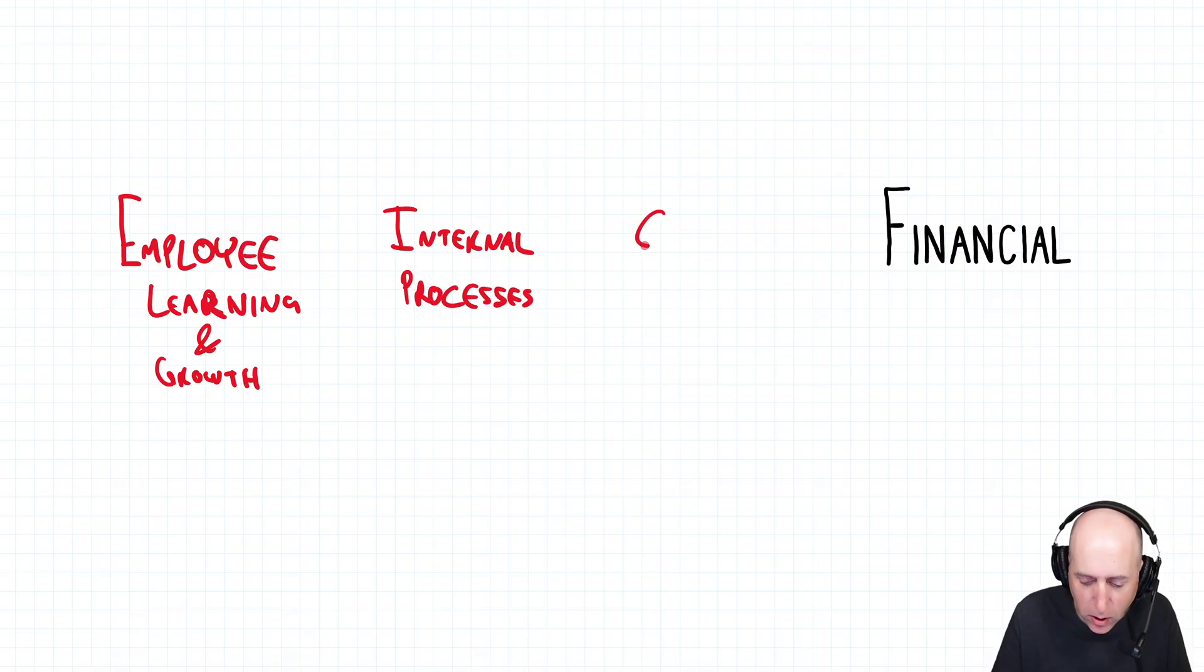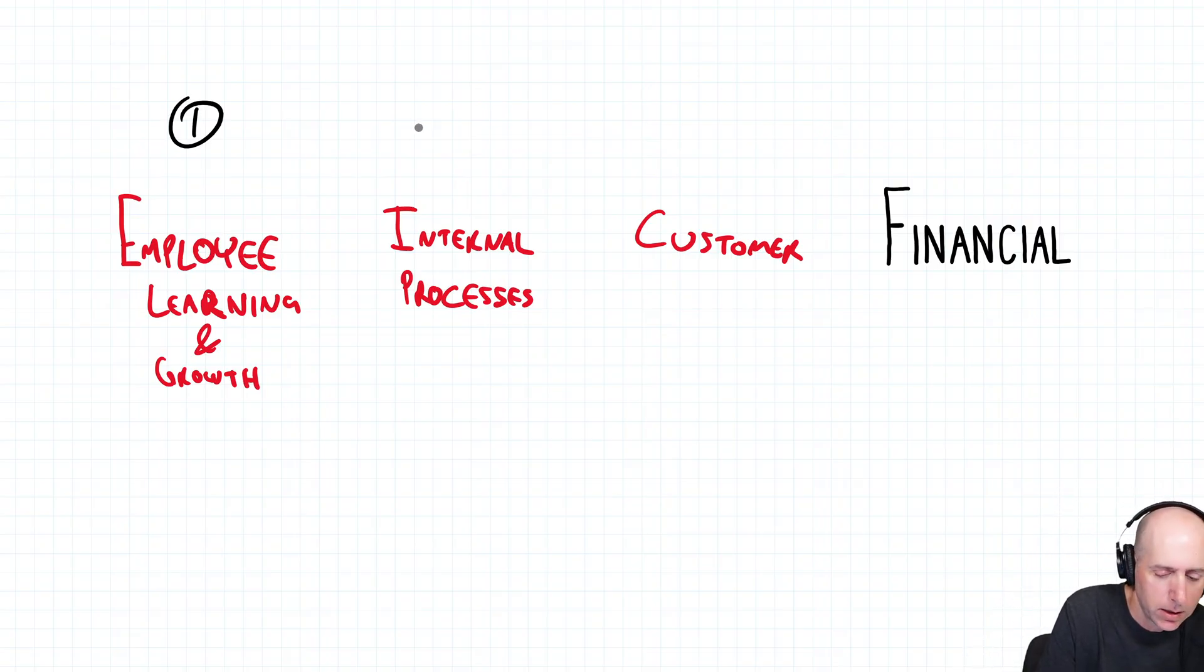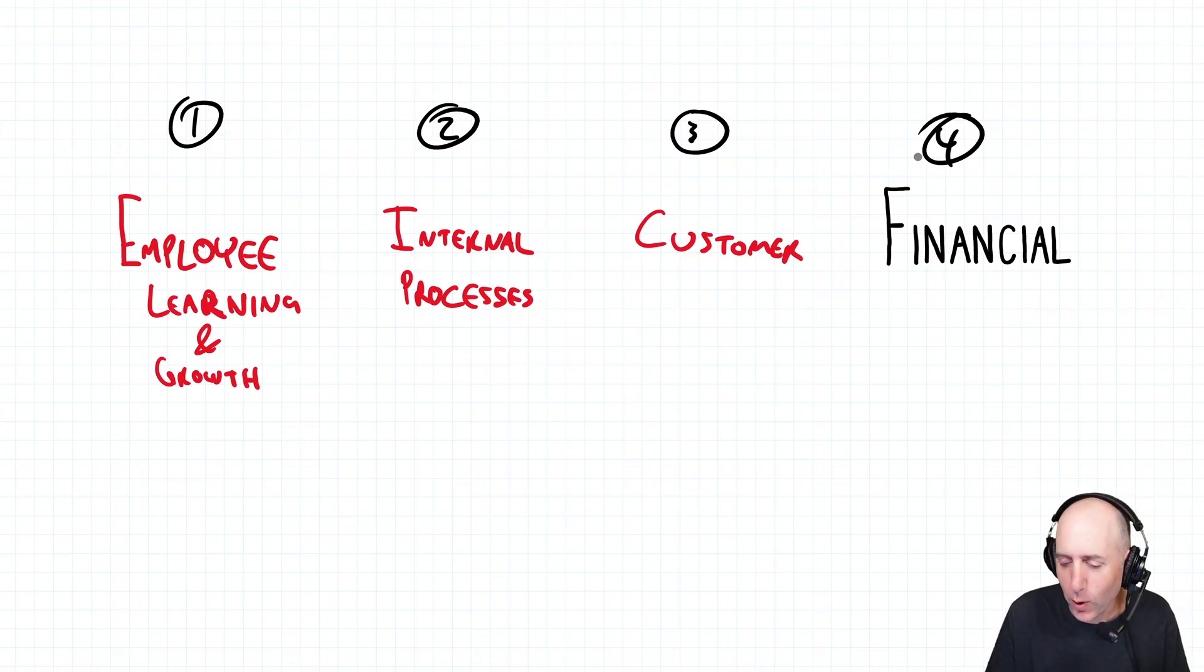And you should also be worried about your customer. Of course, that should make some good sense. So the balanced scorecard says you should balance your concerns between these one, two, three, four items. You should be worried about all four of them basically in equal measure.